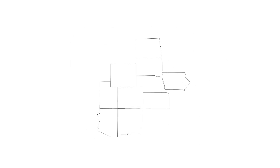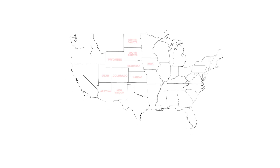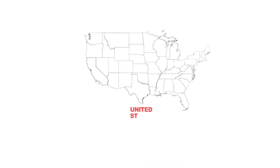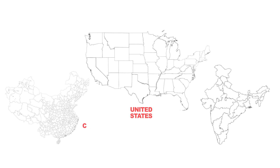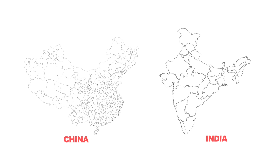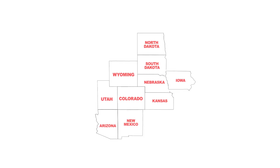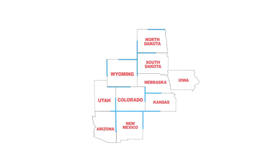All of this confusion starts with exceptionally similar square and rectangular shapes of many US states, which is a prominent feature across Western and Central United States. When we compare the political map of the contiguous United States with other countries like China and India, it's clear that every state or province in those countries has a unique shape. So why did the US Congress do such a sloppy job forming some states by just drawing straight lines, which even a 5-year-old can do?